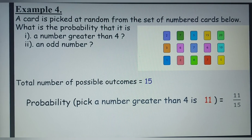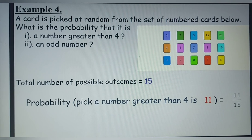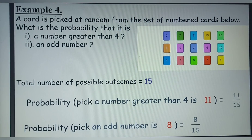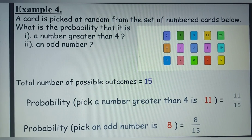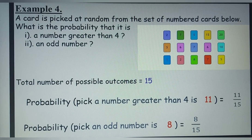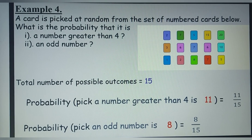What is the probability that the card picked is an odd number? Checking the cards for odd numbers, we have 7, 5, 15, 3, 7, 1, 7, and 5 — altogether 8 odd numbers. So the number of ways possible is 8 and the total number of possible outcomes is 15. Therefore, the probability equals 8 divided by 15.